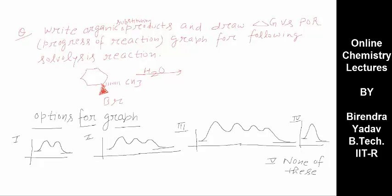The question says: write organic substitution products and draw a delta G versus progress of reaction graph for the following solvolysis reaction. I am giving you options for the graph. If you see the first option, there are two transition states and one intermediate, so the reaction must take place in two steps. If you select the second option, there are three transition states and two intermediates, meaning the reaction takes place in three steps. The fourth option shows the reaction taking place in one step only.